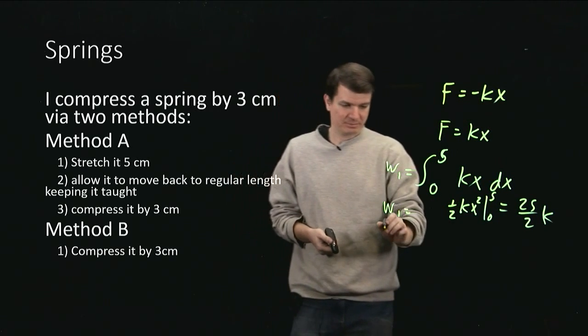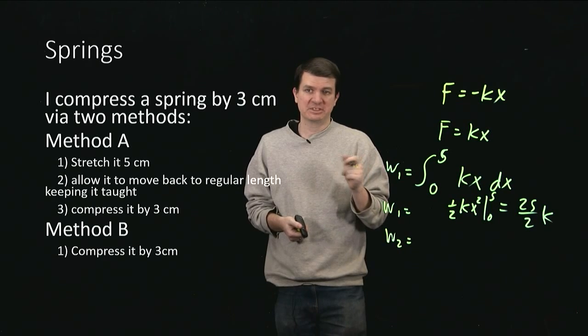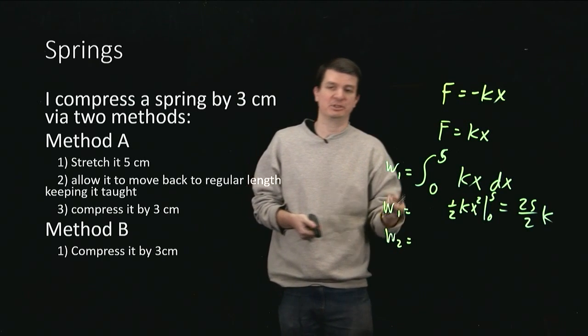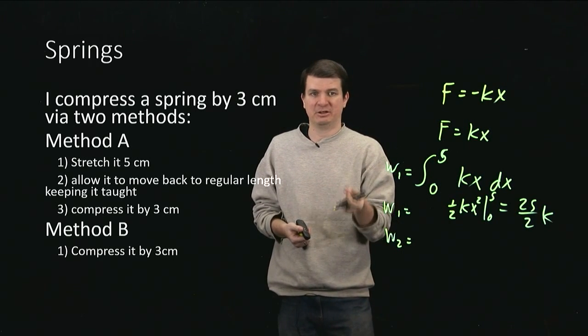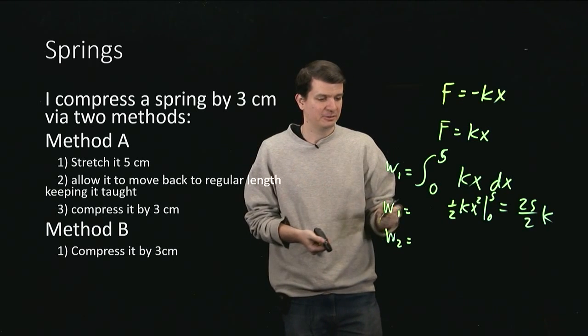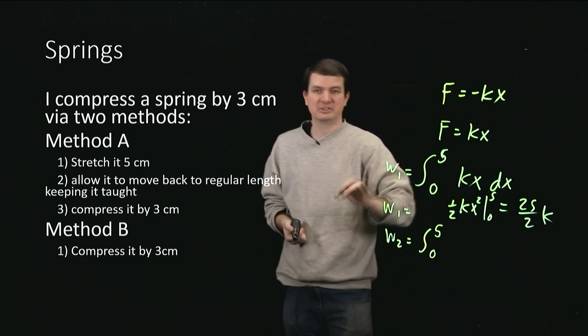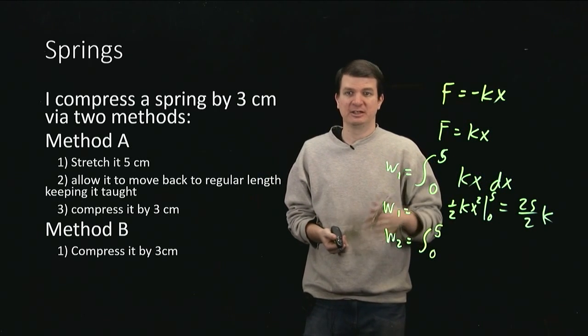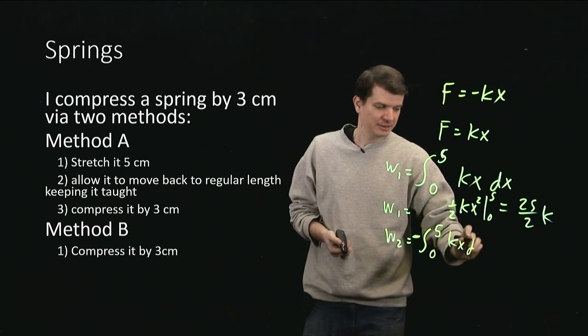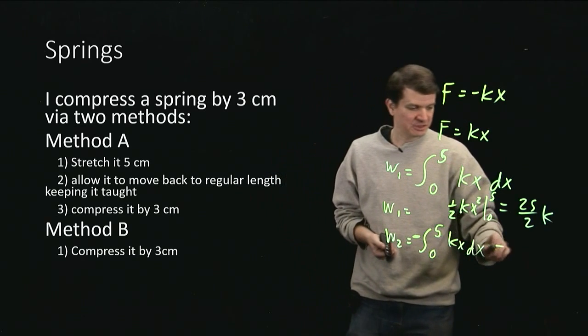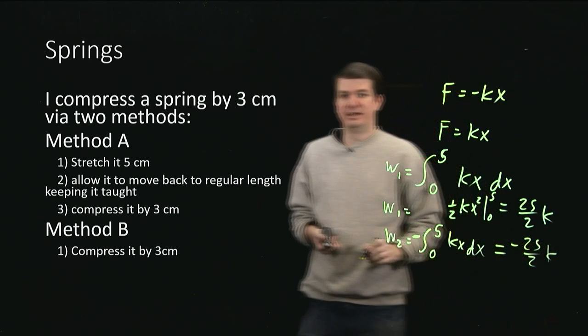Okay, what about step 2? Well in step 2, the displacement is now back in the other direction, but the force is still in the same direction. I'm working against the force of the spring here still, because the spring wants to accelerate the end back, but I'm holding it so that it stays taut, so that it does not accelerate. I'm just gradually letting it move back. So in this case, when I take the dot product of my force dotted into the tiny bit of displacement, I do in fact get a negative sign overall. So I've got negative kx dx. And of course, that's the same integral but with a negative sign out in front, so I'm going to get negative 25 on 2 times k for this step.